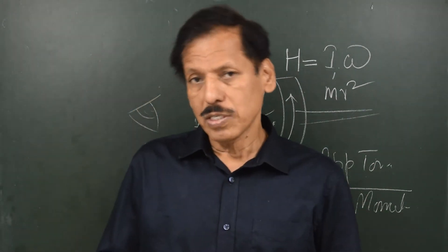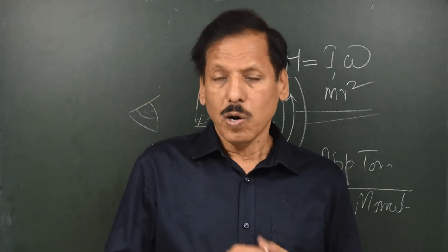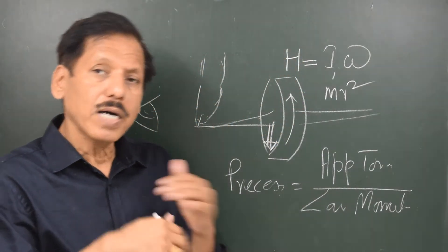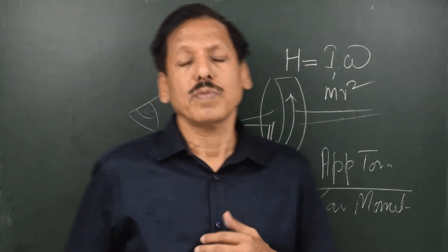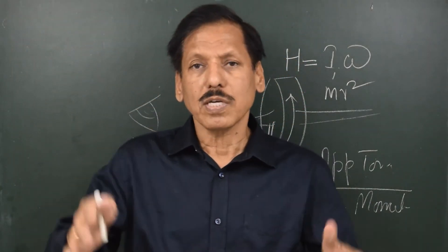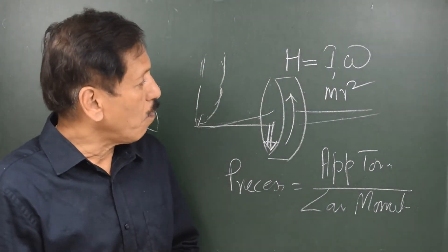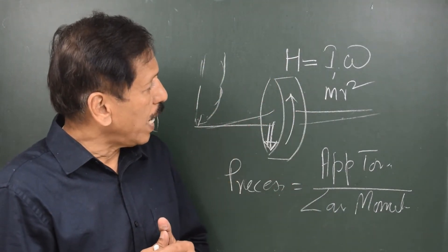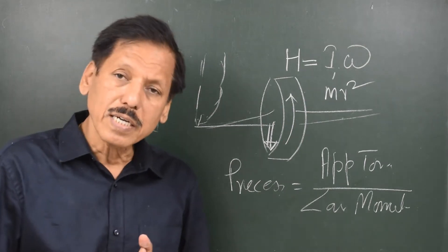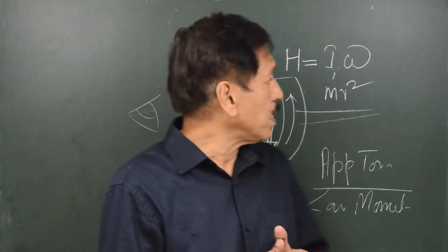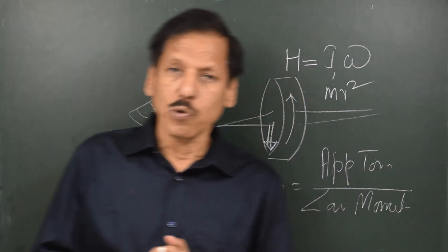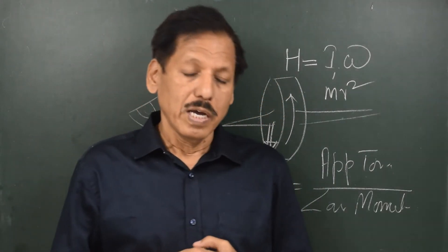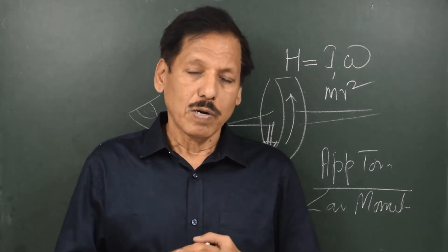Larger dimensions would be better, and concentration of the mass away from the center — towards the surface — would be welcome. Looking at H equals I·omega, you will understand there is a relationship between I and omega. If I increase I, omega will go down. If I decrease I, omega will go up.